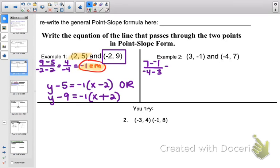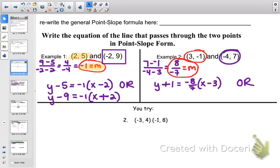Again, find the slope. Negative 8 sevenths can't be reduced. So let's go ahead and pick that first point and plug it in. y minus negative 1 changes to y plus 1 equals our slope times x minus 3. If we use the other point, we would have gotten y minus 7 equals negative 8 sevenths x plus 4. Go ahead and do the you try on this page.